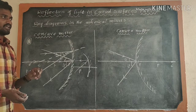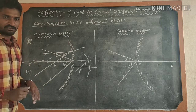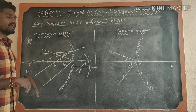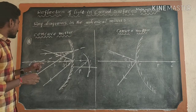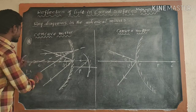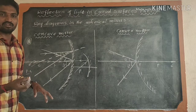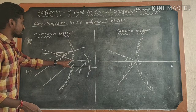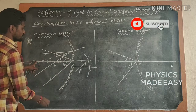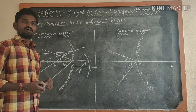In two situations the light ray is undeviated: when passing through along the center of curvature, and when passing through along the principal axis. When the incident ray strikes the pole, a reflected ray is formed and the principal axis acts as the normal. Thank you very much. Please subscribe to our channel and like and share with your friends.